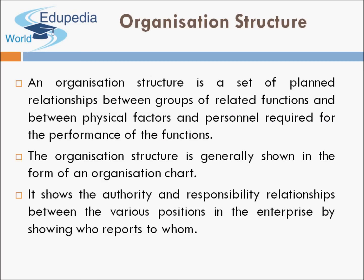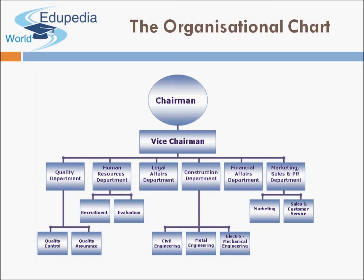The organization chart shows the authority and responsibility relationships between various positions in the enterprise by showing who reports to whom. For example, the chairman is at the top, then the vice chairman reports to the chairman. Under the vice chairman are various departments, and every department has sub-departments. Quality control and quality assurance are sub-departments of the quality department; recruitment and evaluation are sub-departments of the HR department.